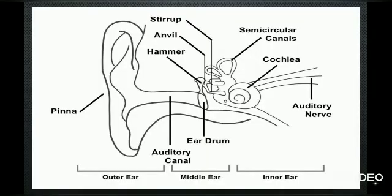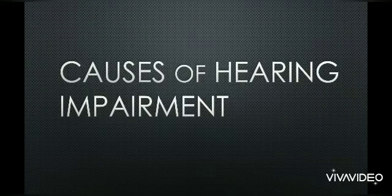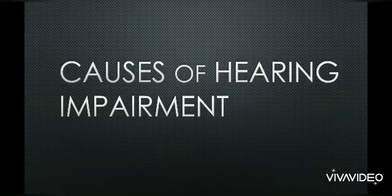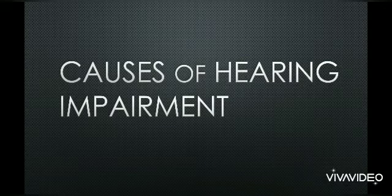First, we have here the structure of an ear. The three basic parts include the outer ear, middle ear, and inner ear. We also have the ear canal, ear drums, ossicles, and auditory nerve. These are the basic parts of an ear, which were discussed in detail in the previous video. Now let's look at the causes of hearing impairment.